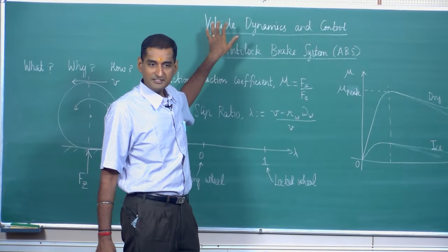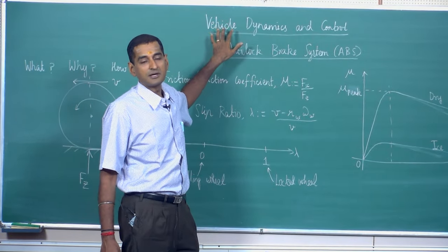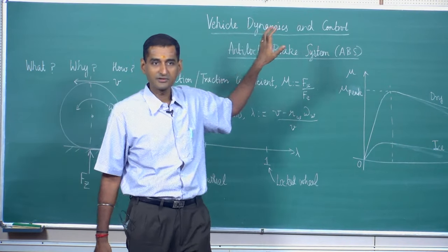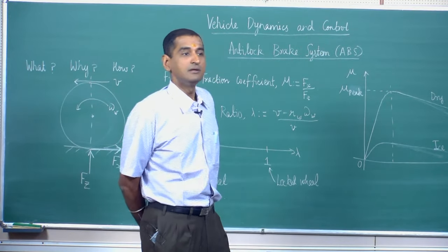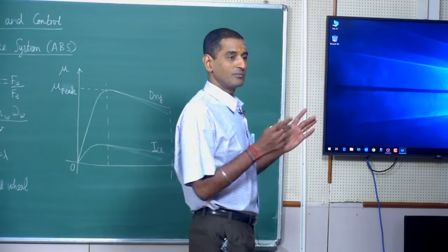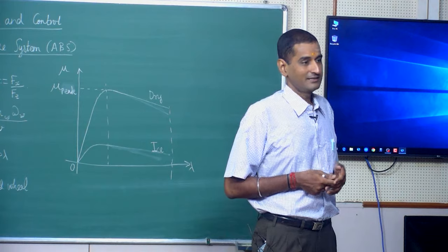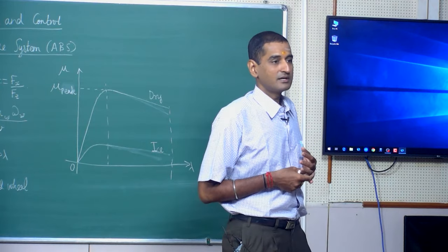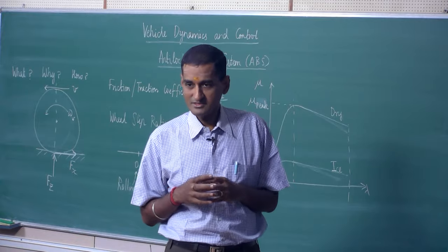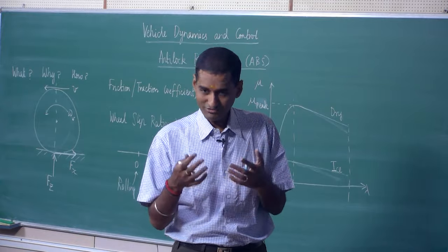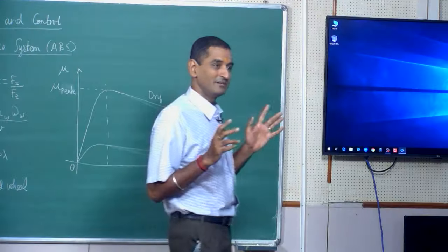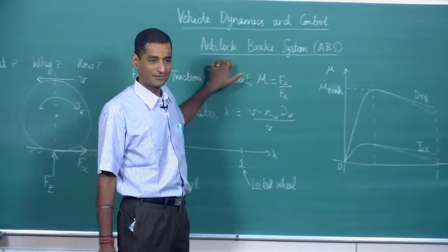As we transition to more complex and advanced automobiles, the domain of vehicle dynamics and control is going to become very important. To motivate the importance of this particular domain to automotive design, today I am going to take a simple example of anti-lock brake systems, which all of us are aware of, and then map how vehicle dynamics and control is applicable to this application.